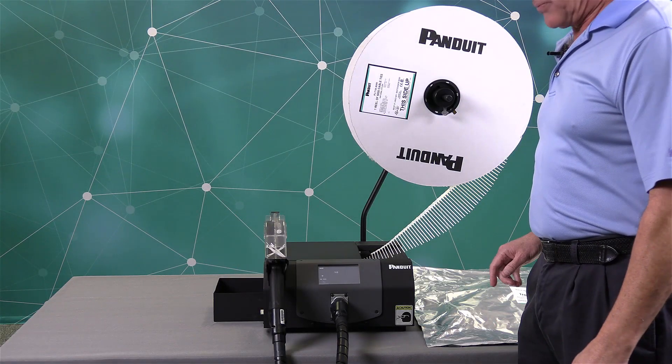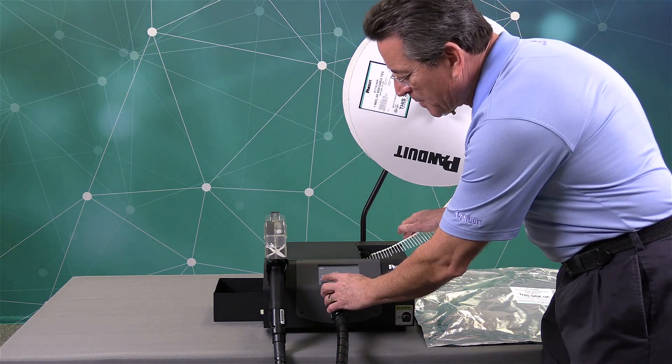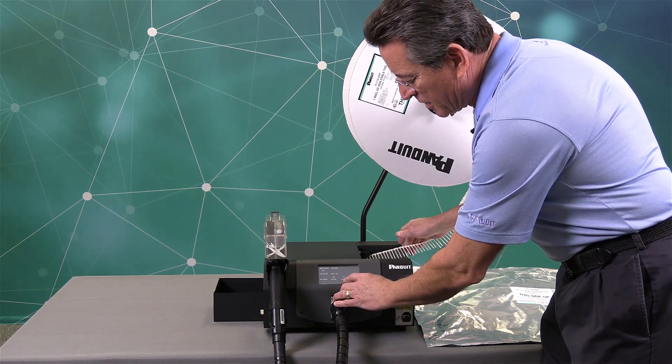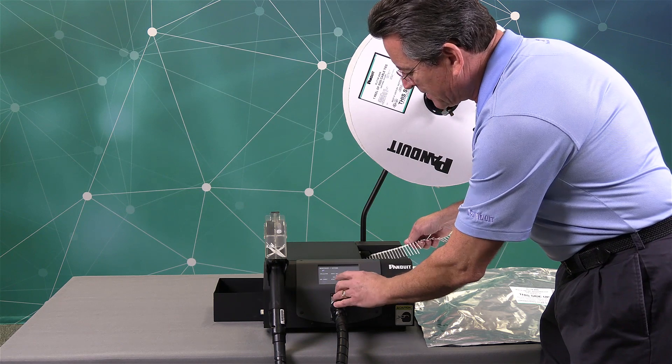In order to unload the reel of cable ties and store them when you're done using, press the maintenance button. Then press the settings button. And then there's an unload button. So you want to press that button once, twice, three.